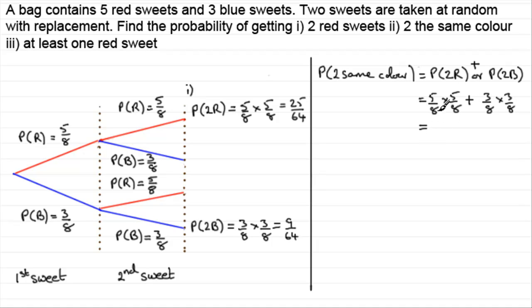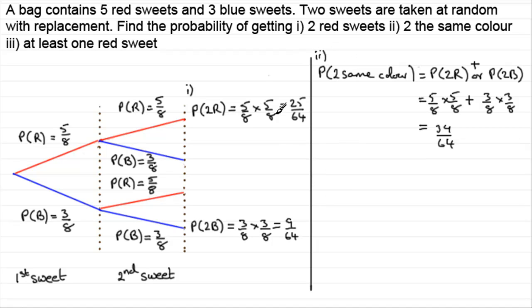So 25 over 64 plus nine over 64 gives us a total of 34 over 64. It's important to realize that for mutually exclusive events, we just add them together.